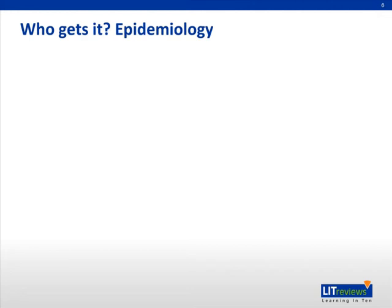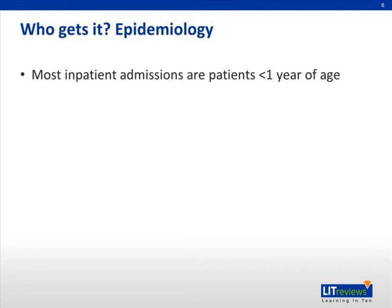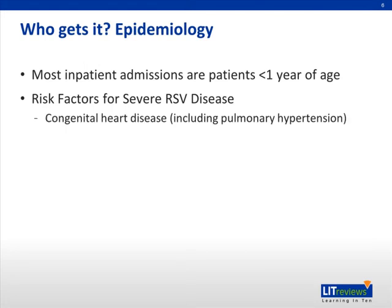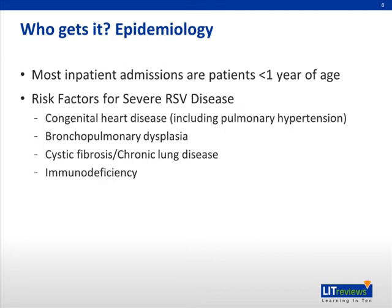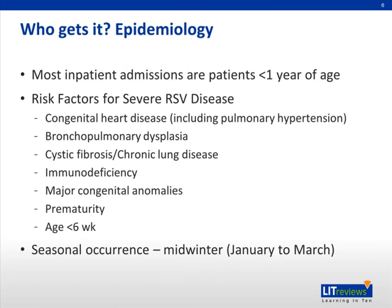The next question to consider is who is going to get this infection. Most inpatient admissions are for patients who are less than one year of age. There are certain risk factors for severe RSV disease, including comorbidities like congenital heart disease, bronchopulmonary dysplasia often associated with premature birth, cystic fibrosis or other chronic lung diseases, immunodeficiency, congenital anomalies, and prematurity. Interestingly, this disease process does have a seasonal occurrence, with most infections occurring in midwinter from January to March in the United States.